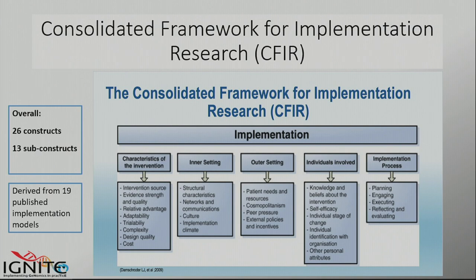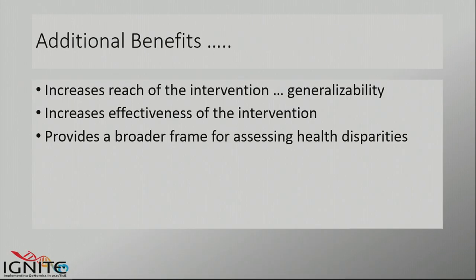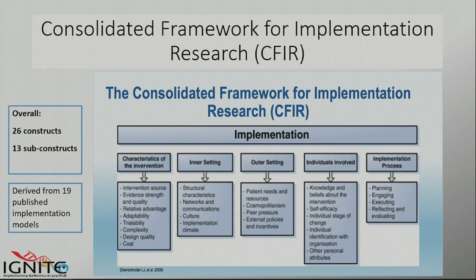CFIR is a framework — it lists a bunch of constructs but does not tell you exactly how they interact. They took 19 very common implementation models and pulled all the constructs together, saying 'here's everything these models say is important,' and put them into domains: things about the intervention, the inner setting (the hospital or health system), the outer setting (your city, state, politics), the individuals involved such as providers and clinicians — patients are notoriously somewhat absent from CFIR, which is one of its drawbacks — and then the implementation process.